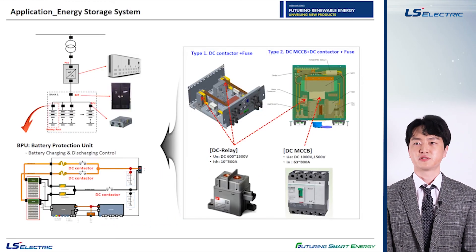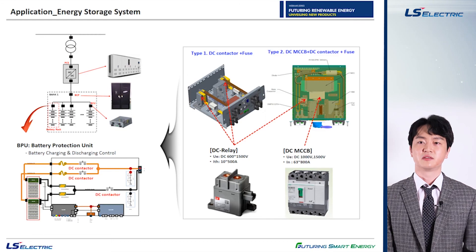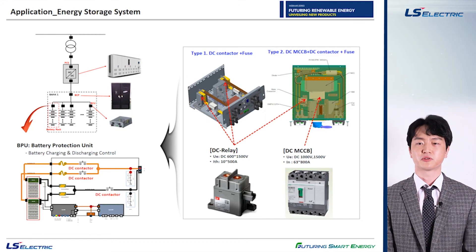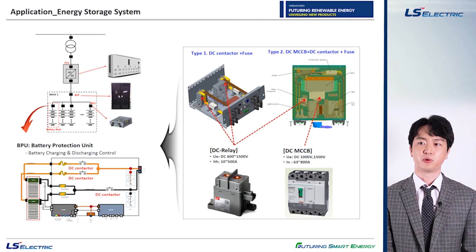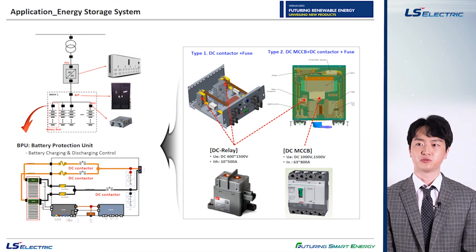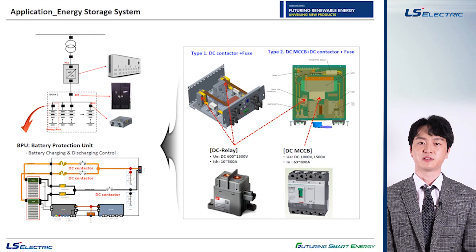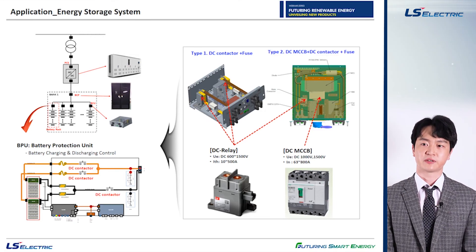In terms of energy storage system applications, the DC contactor is commonly used in the primary protection unit called BPU — battery protection unit. Since it is one of the crucial DC components, together with the fuse, to protect one battery rack, it is generally composed of 10 to 12 battery modules requiring the capability of higher ampere making, breaking, and arc extinction.